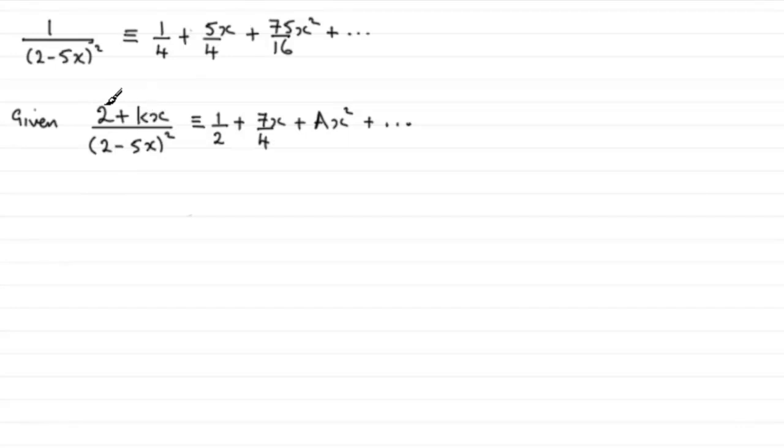I'll show you. What we do is we take this expression here, let's just put it down: 2 plus kx all divided by 2 minus 5x all squared. Now, we can think of this as 2 plus kx multiplied by the 2 minus 5x to the power minus 2.